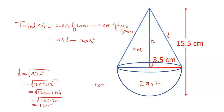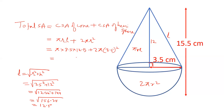यह हम जल्दी calculate कर सकते हैं — 156.25 का shortcut method है जो मैं किसी अन्य video में बताऊंगा। L की value 12.5 है। अब value put करते हैं: pi r = 3.5, L = 12.5। Pi common आ जाएगा। पहले part में 12.5 बचेगा, दूसरे part में 2 और 3.5 बचेगा।